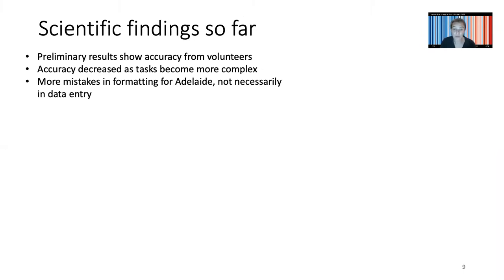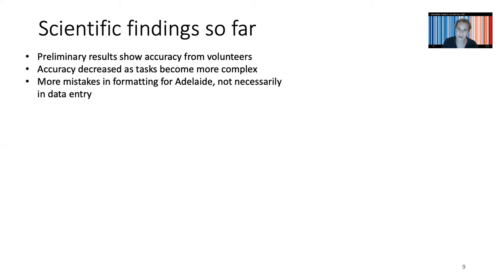Scientifically, the data are proving to be pretty good. We have to do a bit more analysis to assess absolute quality, but in terms of what the volunteers have done, the data seem to be great. We got each value digitized up to eight times so we could be more confident in the results — that might have been a little bit of overkill, but similar projects elsewhere have used that retirement rate. Accuracy did decrease a little when tasks became more complex, but it wasn't necessarily data entry issues — it was whether there was a skipped value or a skipped day, so observations and dates got a little bit out of joint, which is quite common in data entry.